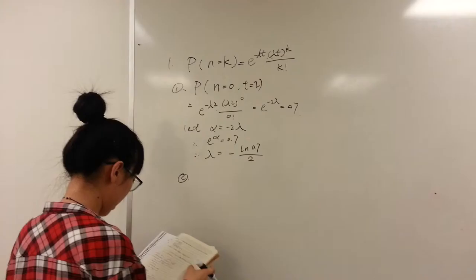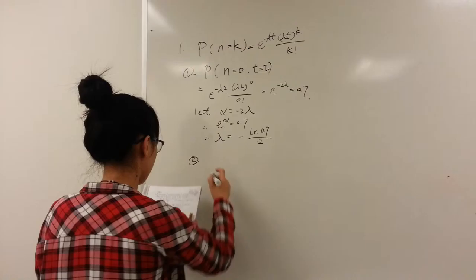The second question is the probability that at least two customers will arrive in ten minutes.